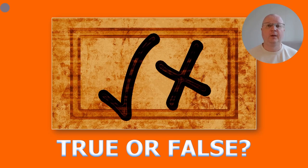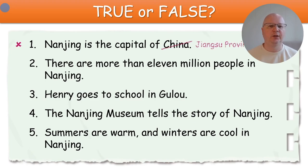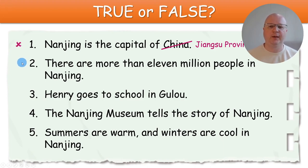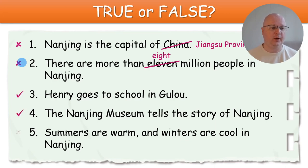True or false — this is a reading comprehension activity. Students need to read the sentences and decide if they're true or false. Number one: Nanjing is the capital of China — this is false. Nanjing is the capital of Jiangsu Province. Number two: There are more than 11 million people in Nanjing — this is also wrong, because there are more than 8 million people in Nanjing.